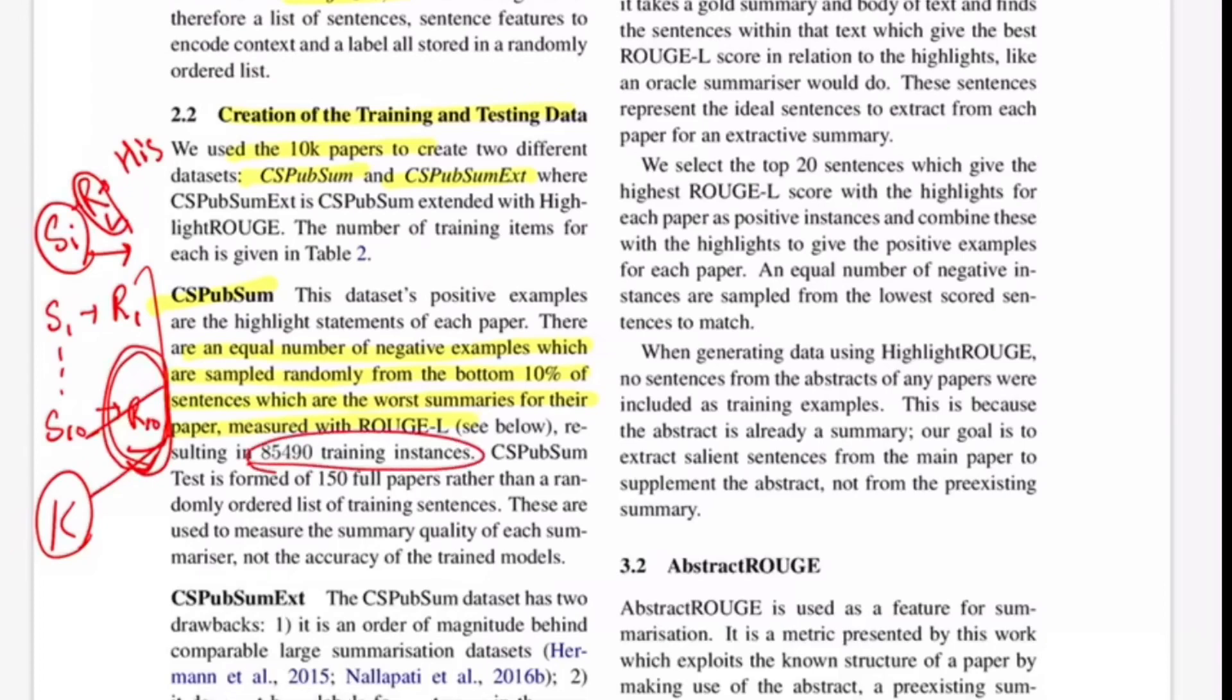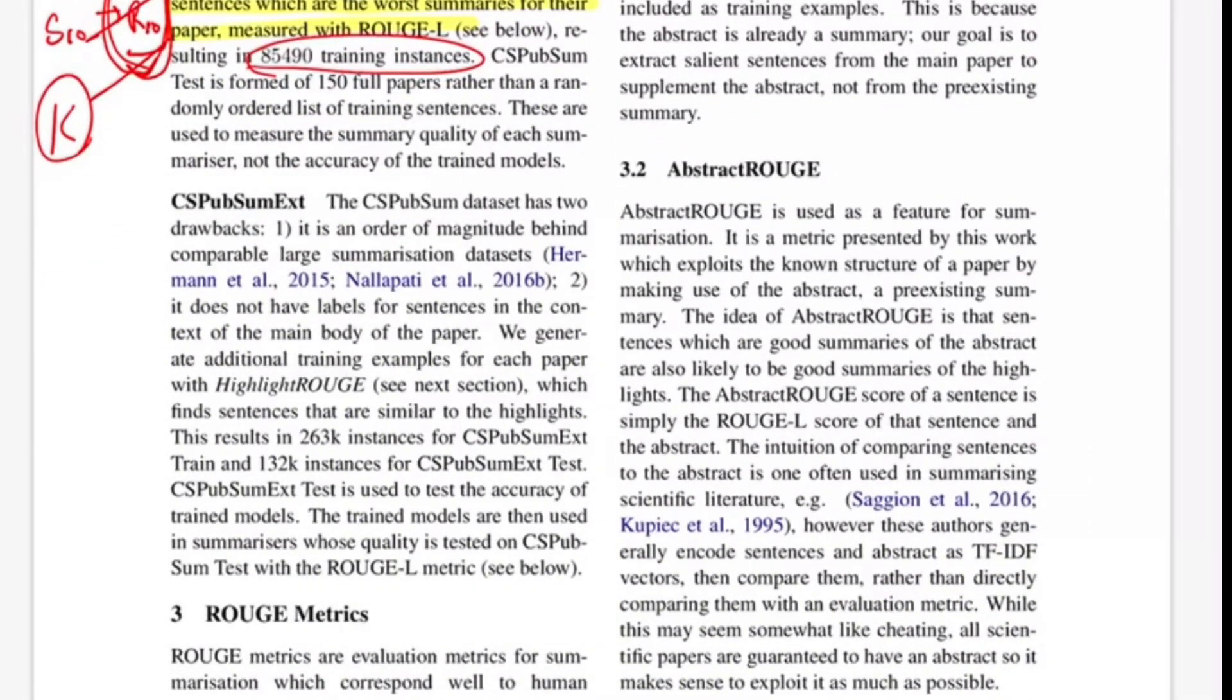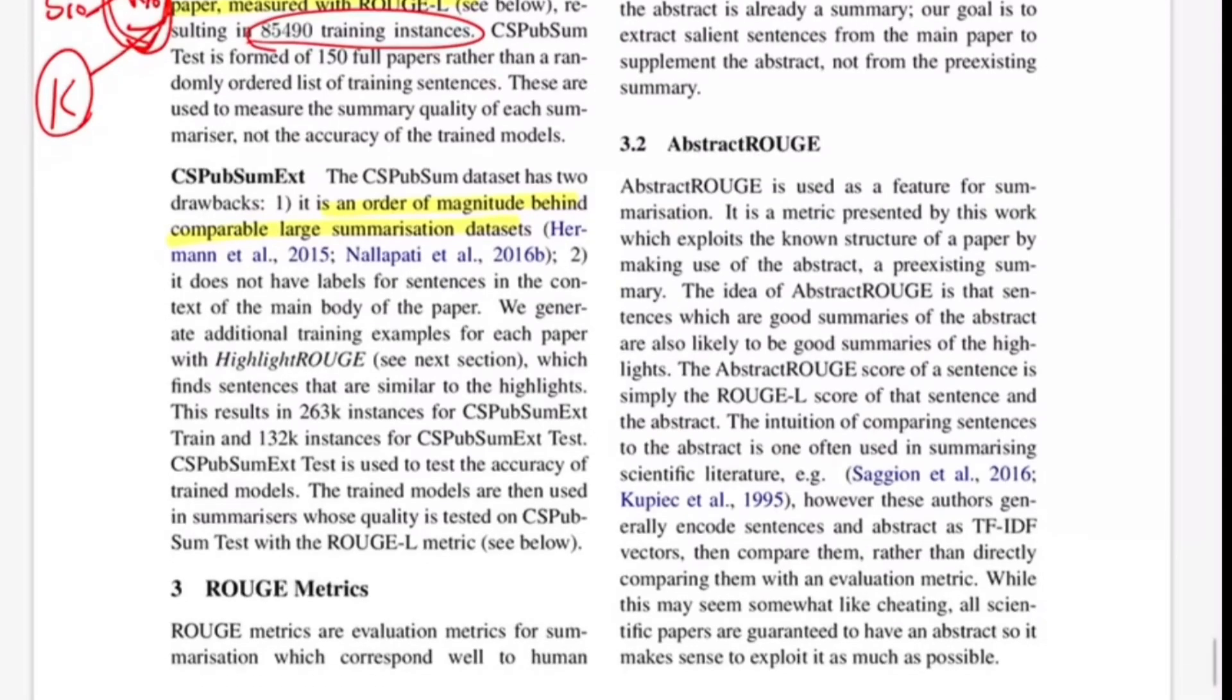With this they have 85,490 training instances. With CSPubSum-ext they're extending the previous set because of certain limitations. The dataset isn't big enough for training a good summarization system. They generate additional training samples for each paper with highlight ROUGE, finding sentences similar to highlights. For every sentence in the document, they do a ROUGE with the highlight sentences, picking top sentences with high ROUGE as potential candidates to add to the original training dataset. Similarly they pick lower 10 percent samples as the negative set. With this technique they have 263k samples in the training set.